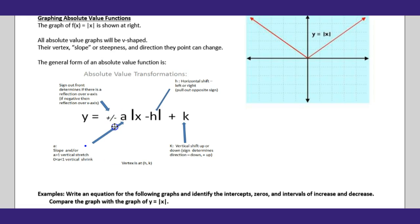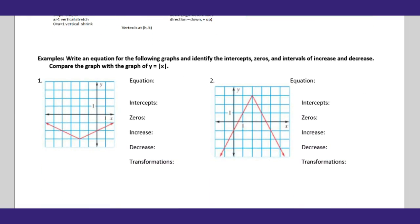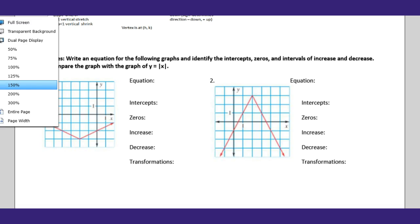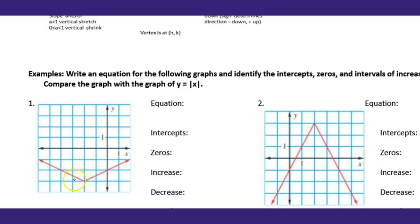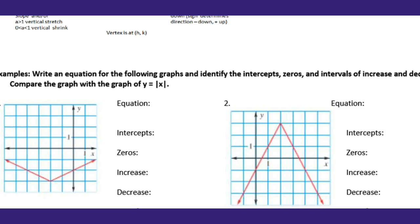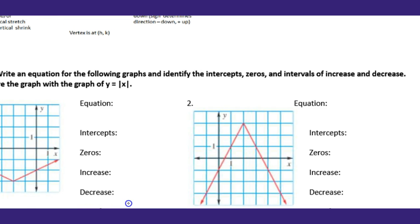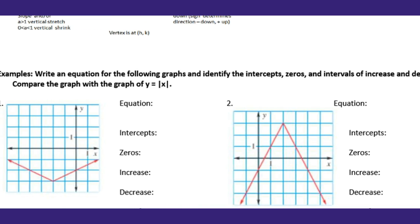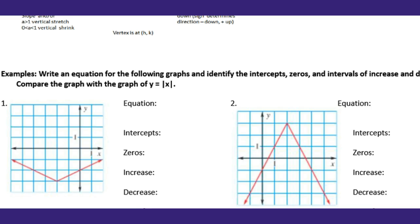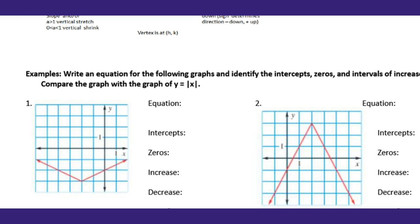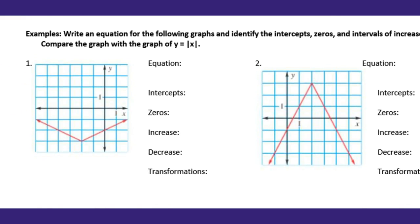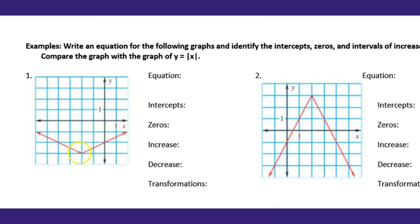Positive opens up, negative opens down. If it's negative it opens down; if there's no negative it opens up. Now let's look at this graph — it says 'write an equation.' Read the directions when you evaluate this stuff. Examples: write an equation for the following graphs and identify the vertex, the zeros, the intervals of increase and decrease, and compare the graph with y = |x|. So first, let's identify our vertex.